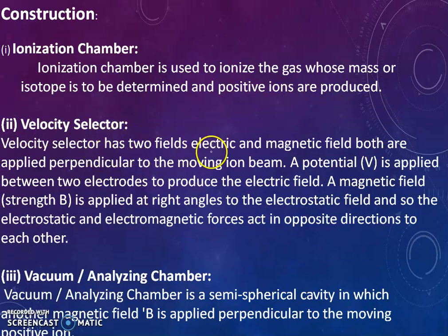Now here the electric and the magnetic field both are applied perpendicular to the moving ion beam. A potential difference V is applied between the two electrodes to produce electric field, and a magnetic field is applied at right angle to the electrostatic field. The electrostatic and electromagnetic force act in opposite direction to each other.